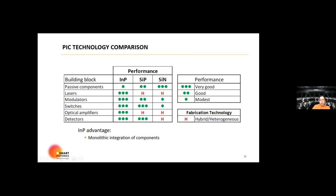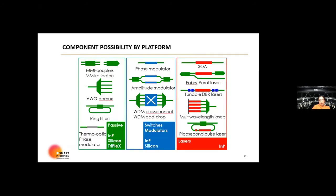When we look at a passive component, all of the three platforms can be suitable. So indium phosphide, silicon, and the TriPleX, the silicon nitride can make that happen. But the switches and modulators can only be manufactured in indium phosphide and silicon photonics. And lasers can only be manufactured using indium phosphide. There are obviously a lot of options available when you're looking at lasers from SOAs, PIC-PHASAR lasers, tunable lasers, DBRs, DFBs, multi-wavelength lasers, and pulse lasers as an example.